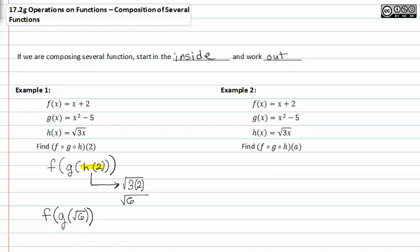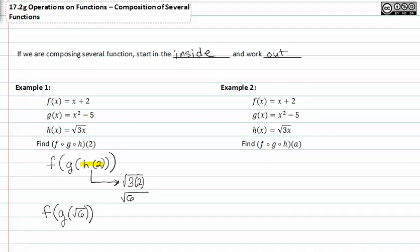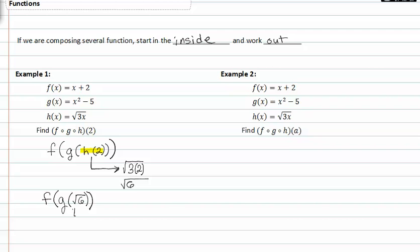From here I can evaluate g of root six, and I know g of x is x squared minus five. So now I'll put root six in where x was, and I get g of root six to be x minus five.